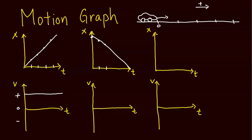Since this is also a constant velocity situation, it's going to be a flat line on the velocity graph. The answer is it's going to be a negative velocity, because the car is traveling in the negative direction. It's still flat because the velocity isn't changing.